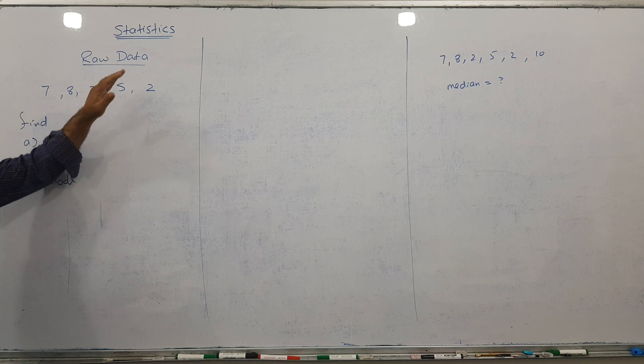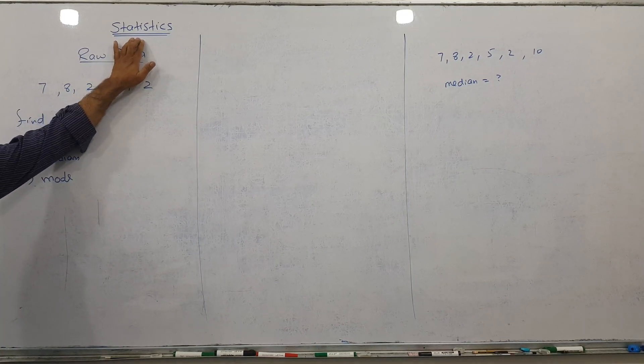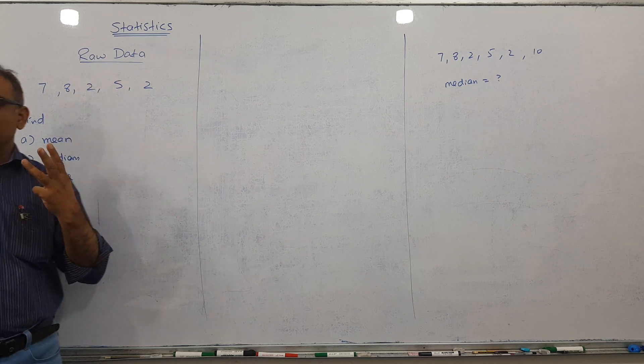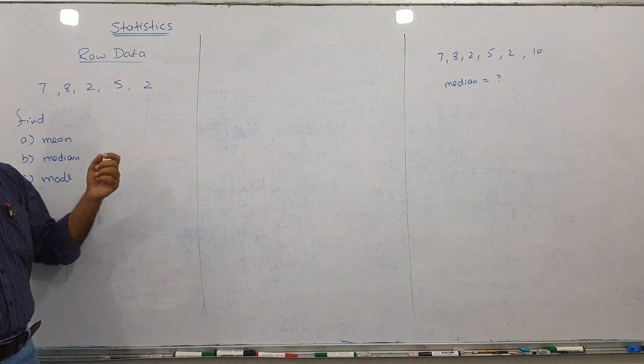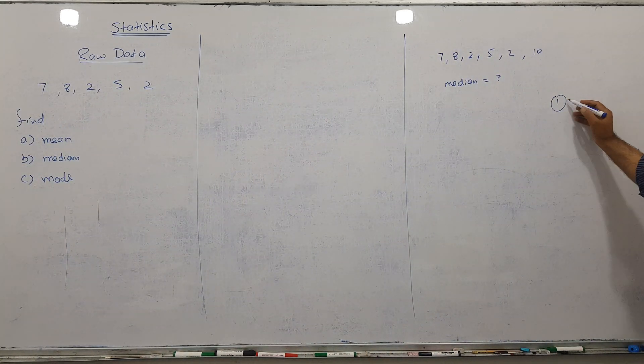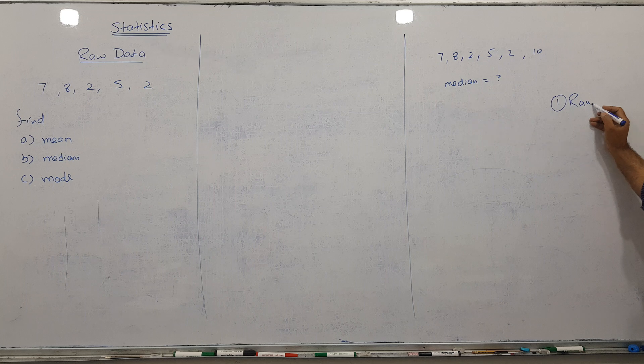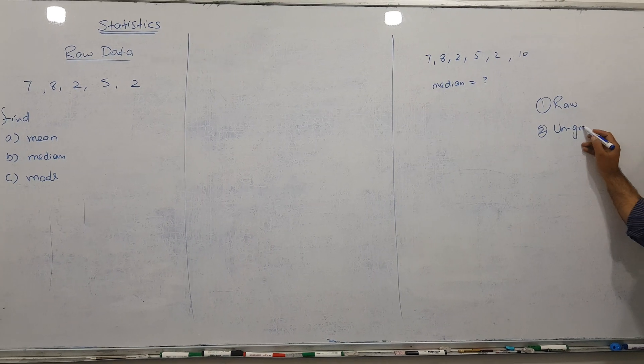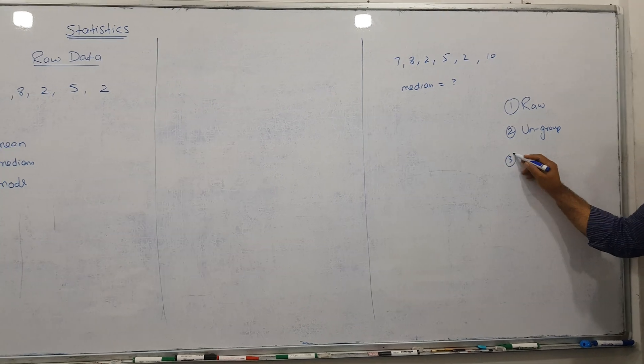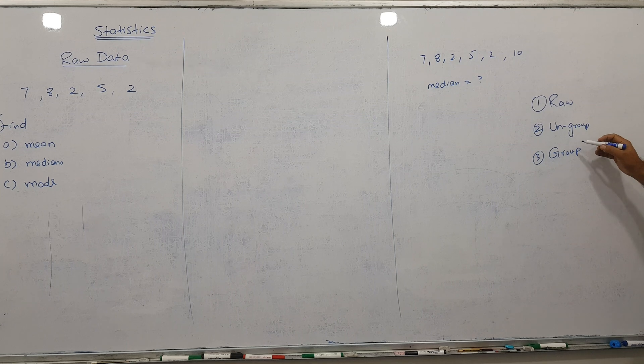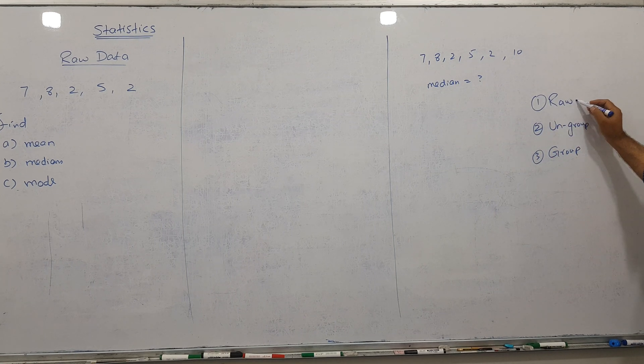Today I'm starting with a chapter of statistics O levels. We have three kinds of data: raw data, ungrouped data, and grouped data. Mostly I'm starting today with raw data.